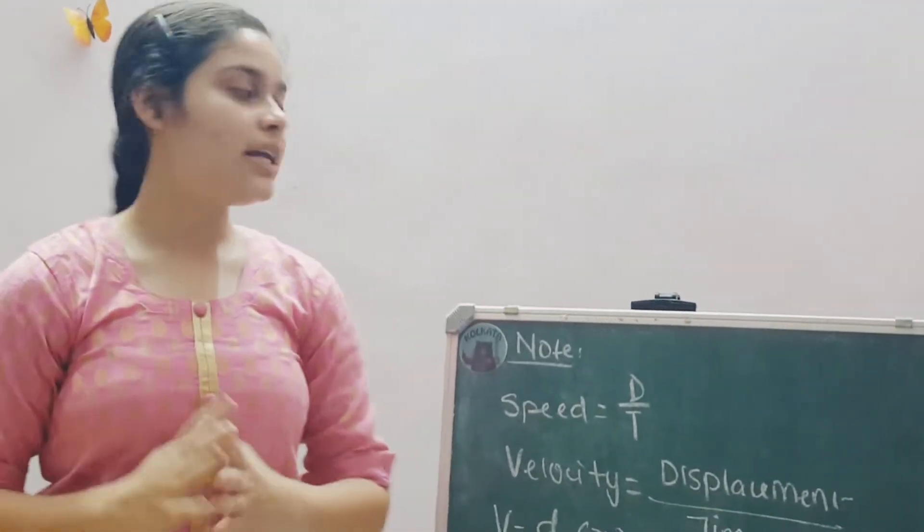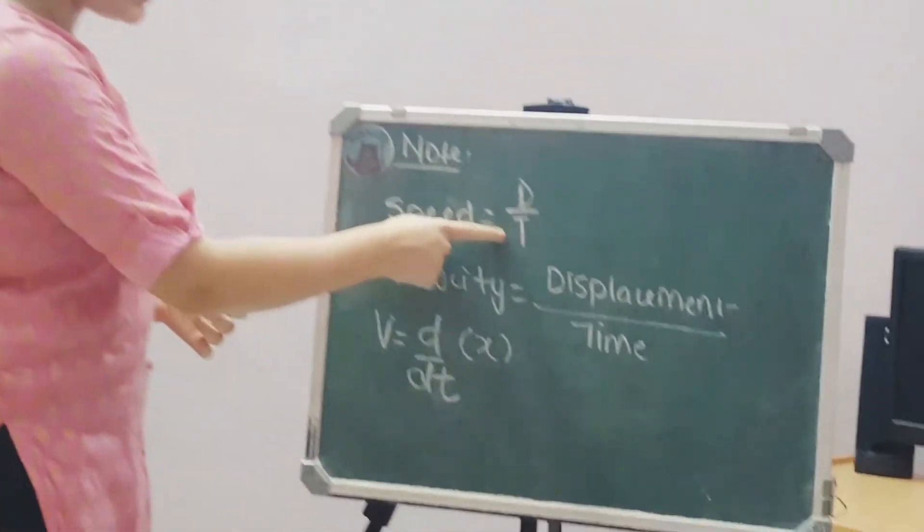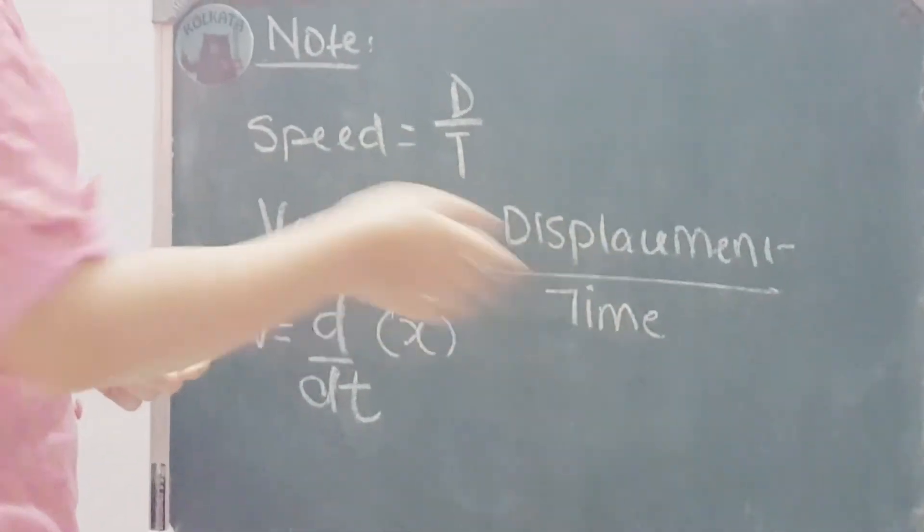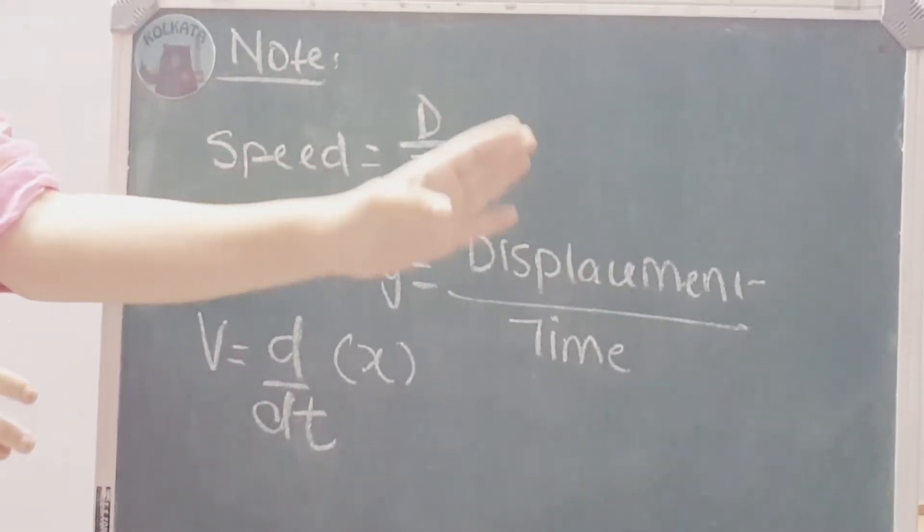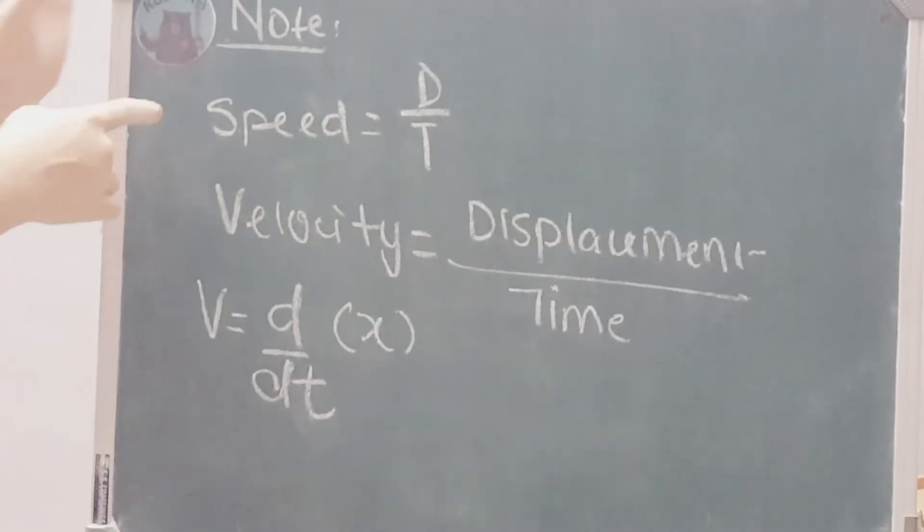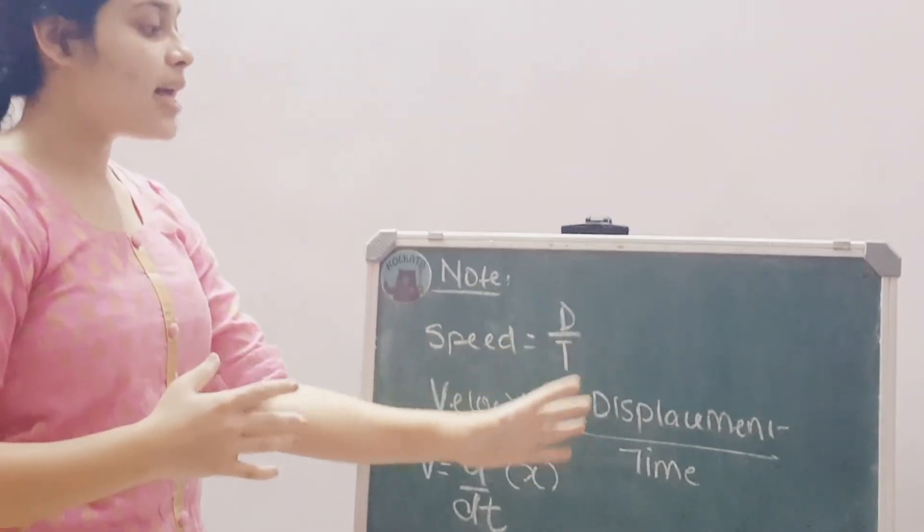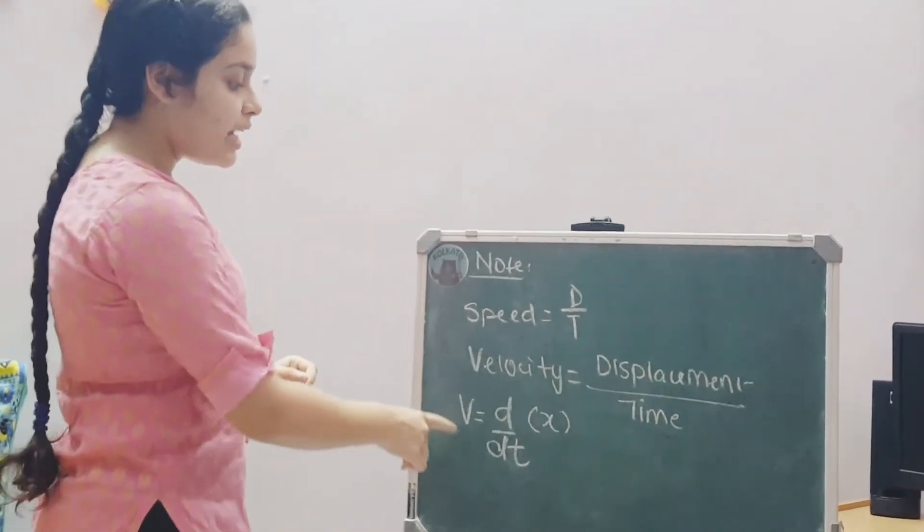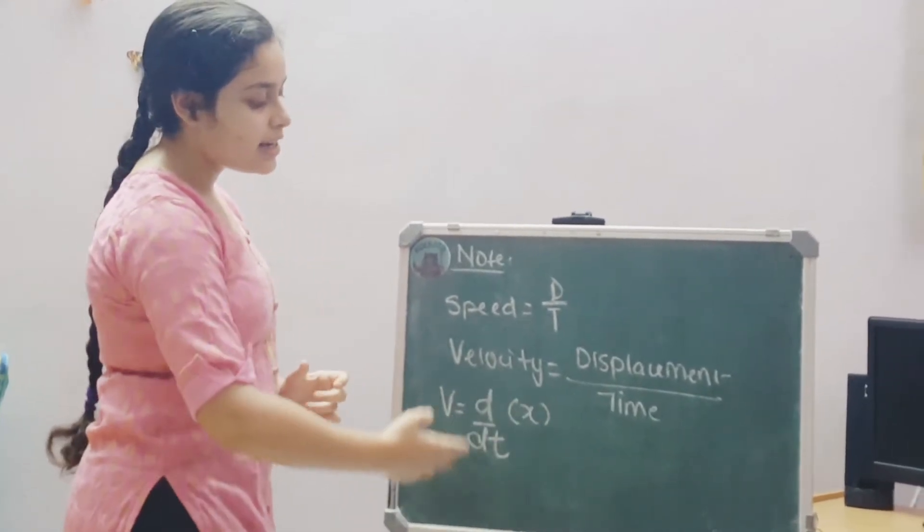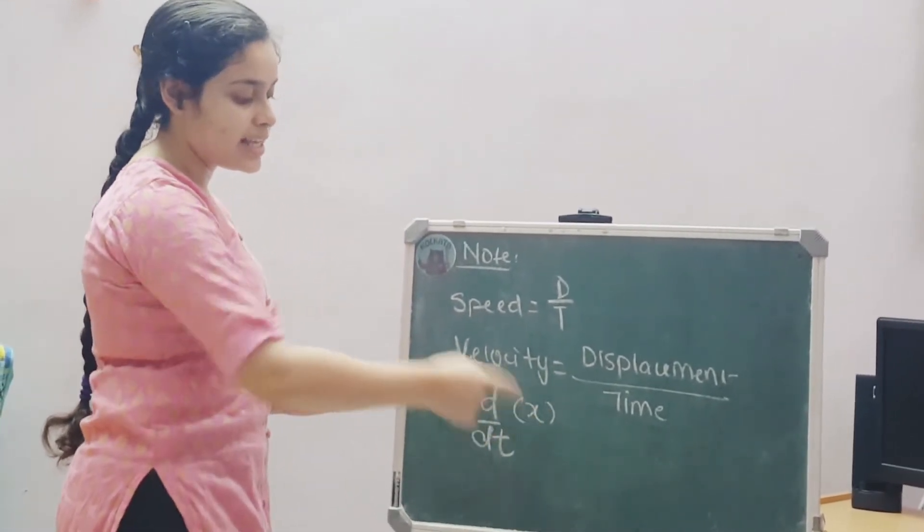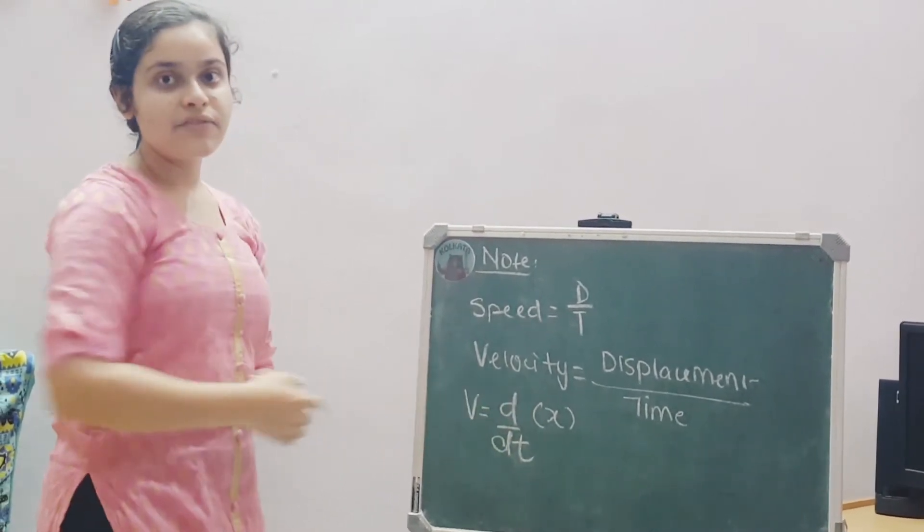I would now like to add a bit of a note here. You know that speed is distance upon time and velocity is displacement upon time. This ought to be referred to as rate of change of distance and rate of change of displacement. So, speed is nothing but a rate of change of distance and velocity is referred to as rate of change of displacement. The rate of change is denoted by d by d. It is a differentiation or a derivative of distance or displacement. So, this is the mathematical representation of velocity and we will be using this frequently.